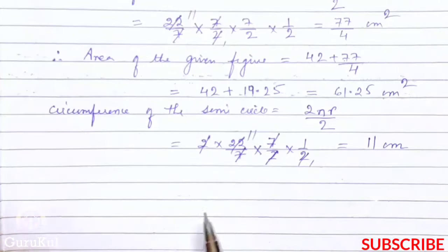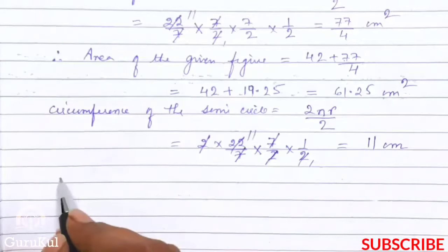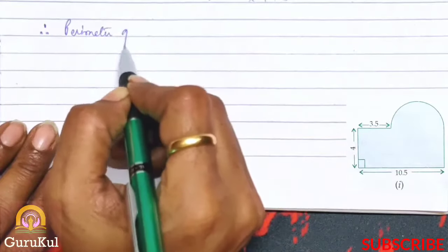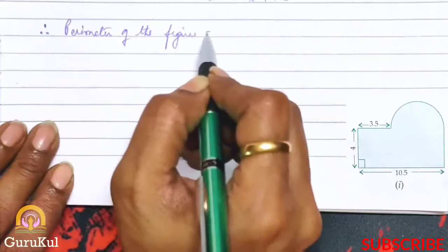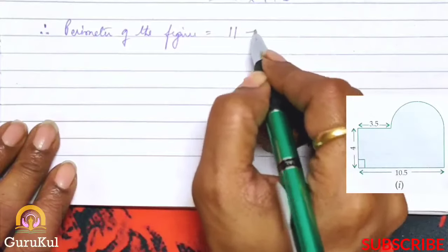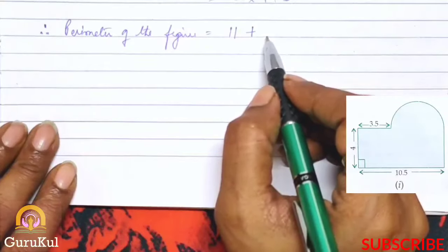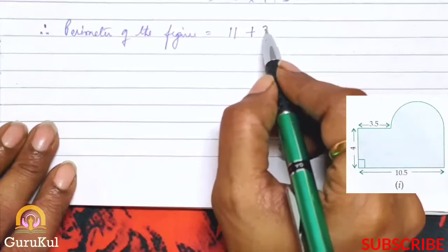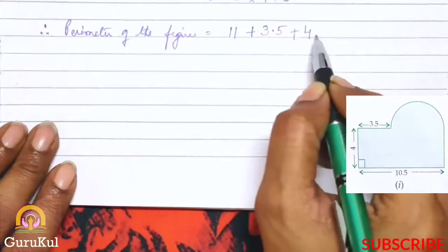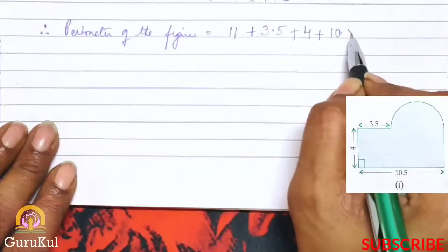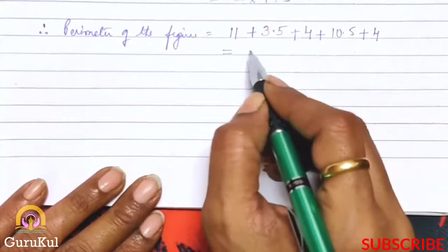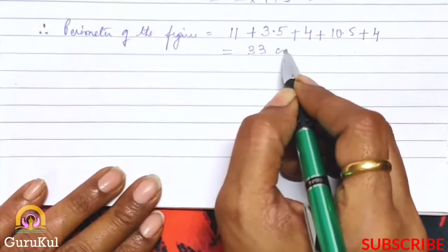Now hum log nikalenge perimeter of the figure ABCD. Therefore perimeter of the figure is equal to circumference of the semicircle, which is 11, plus next measurement is 3.5, plus 4, plus longest side 10.5, plus again 4. So adding all of these, our answer is 33 cm.